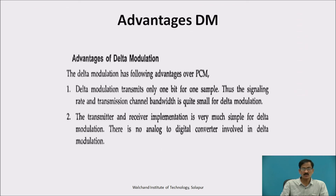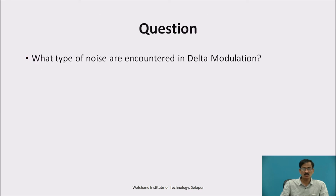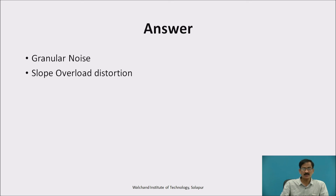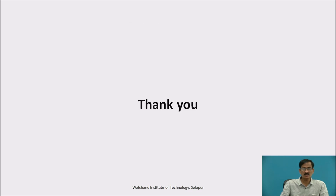Advantages: delta modulation transmits only one bit per sample, so the signal rate and transmission channel bandwidth is quite small. The receiver is very simple, and there is no analog to digital converter involved. Some disadvantages: granular noise and slope overload. Question: what type of noise is encountered in delta modulation? They are granular noise and slope overload distortion. Thank you.